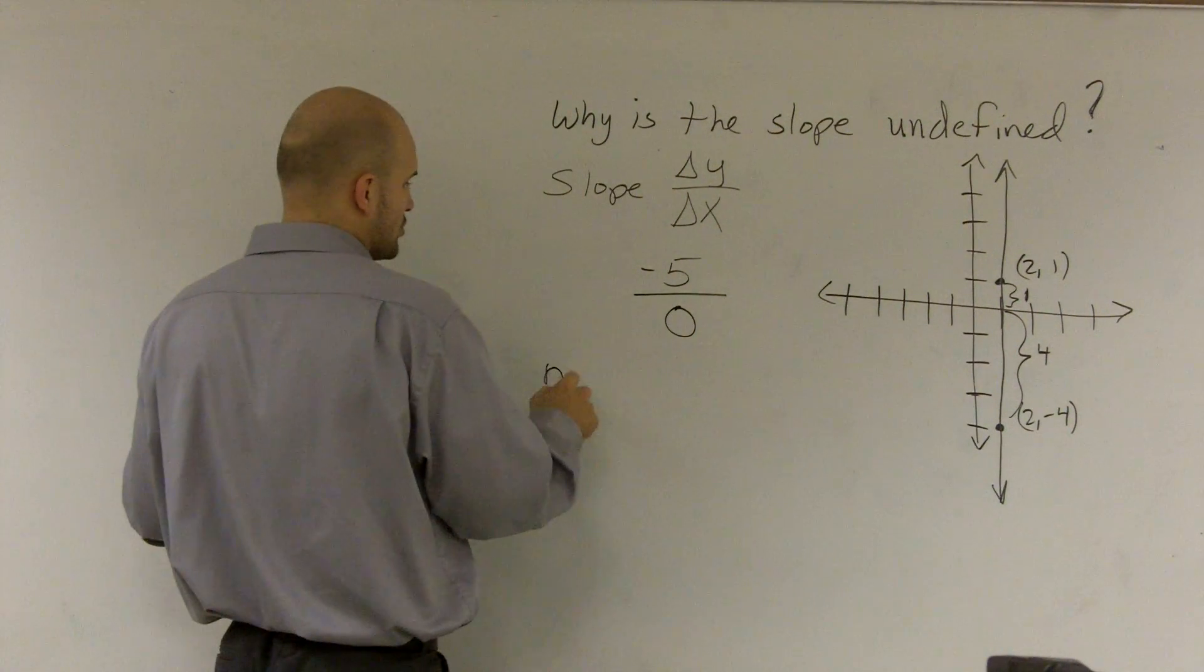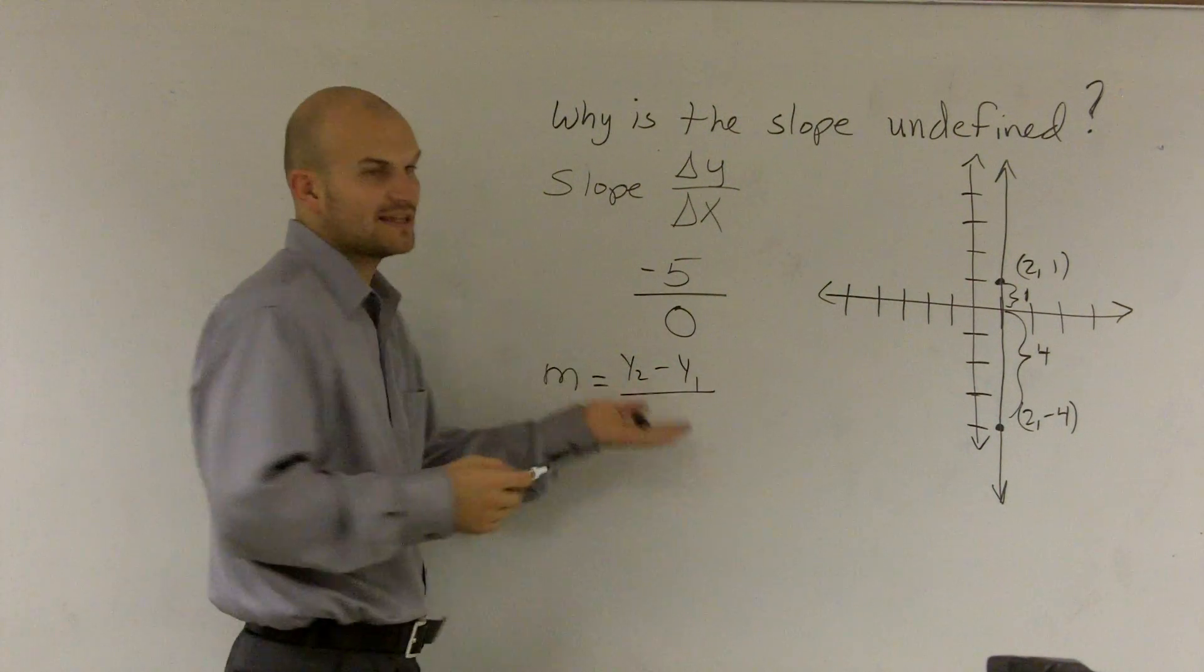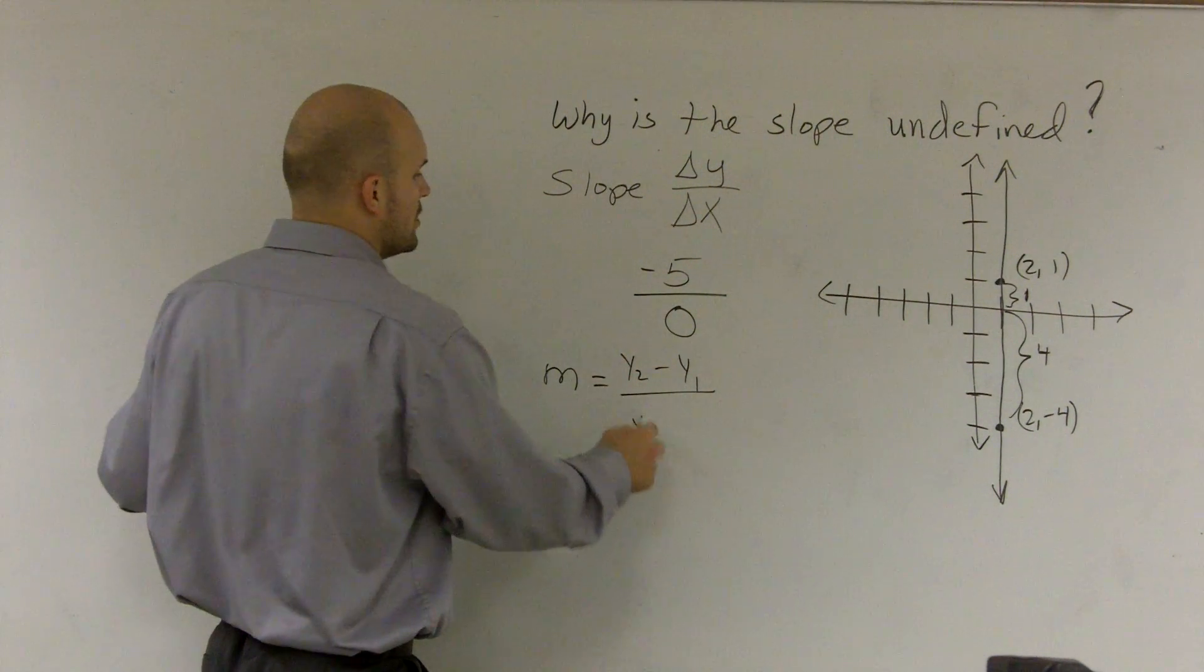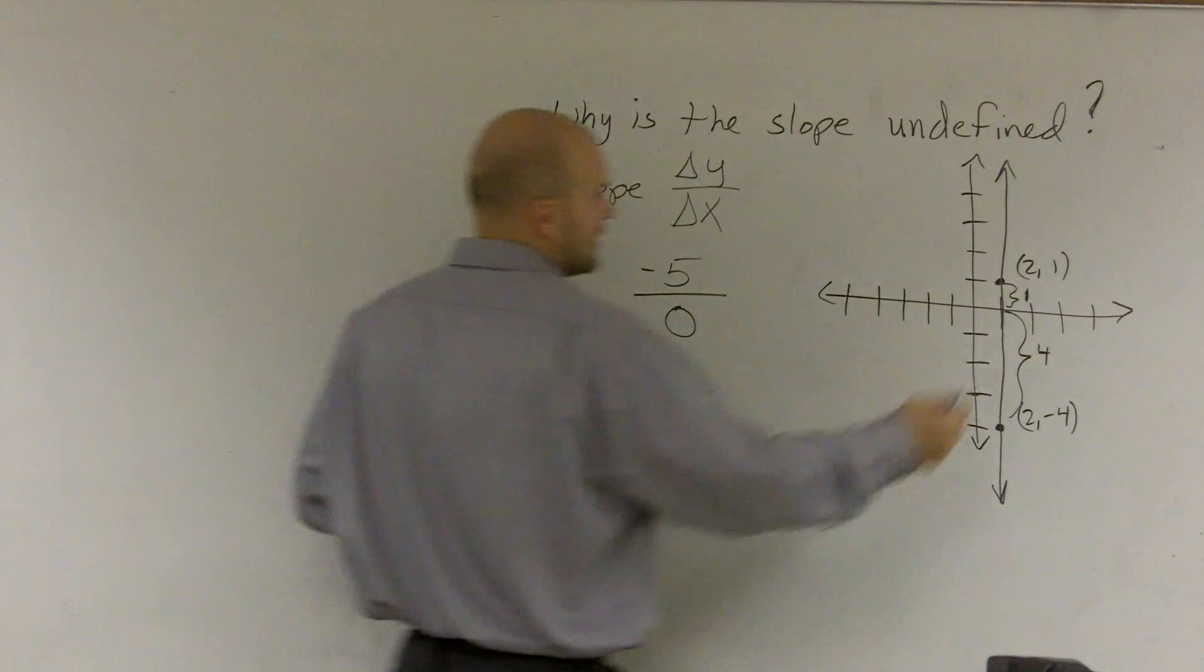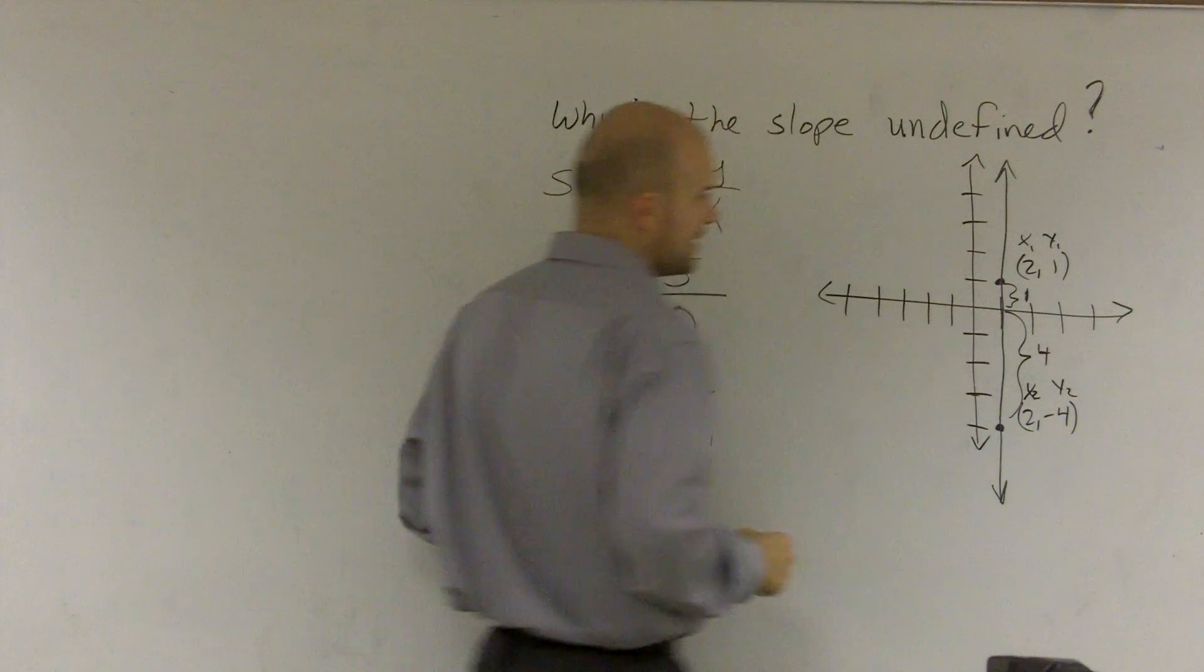Now, let's look at this using the slope formula. If I said m is equal to y2 minus y1, and that's how we find the change. We subtract our y values over x2 minus x1. As I'll say, this is x1, that's y1, all right?